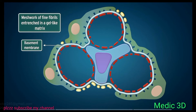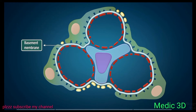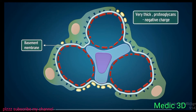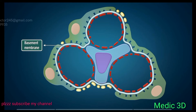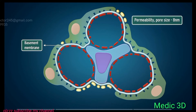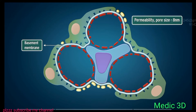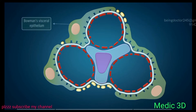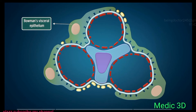The basement membrane is made up of a meshwork of fine fibrils entrenched in a gel-like matrix. Compared to typical membranes, the glomerular basement membrane is very thick and consists of proteoglycans which carry a negative charge. No pores have been demonstrated in the basement membrane; however, its permeability corresponds to a pore size of about 8 nm.